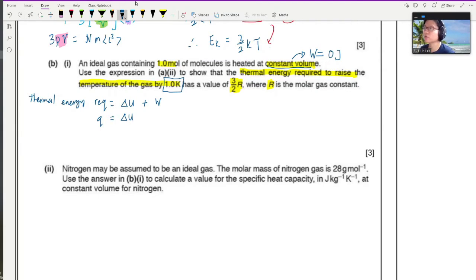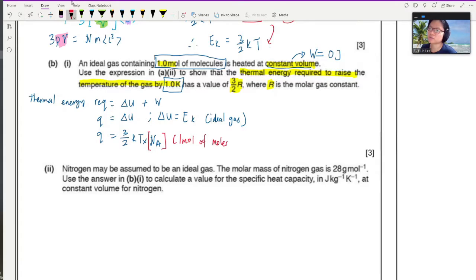Because when you add heat, you increase the internal energy, which is represented by the increase in temperature. So increase in internal energy plus work done by or on the gas. But because there is constant volume here, if you think back from your AS, if there is constant volume, there is no work done by the gas. So work done by gas is zero. This part touches a bit on the first law of thermodynamics.